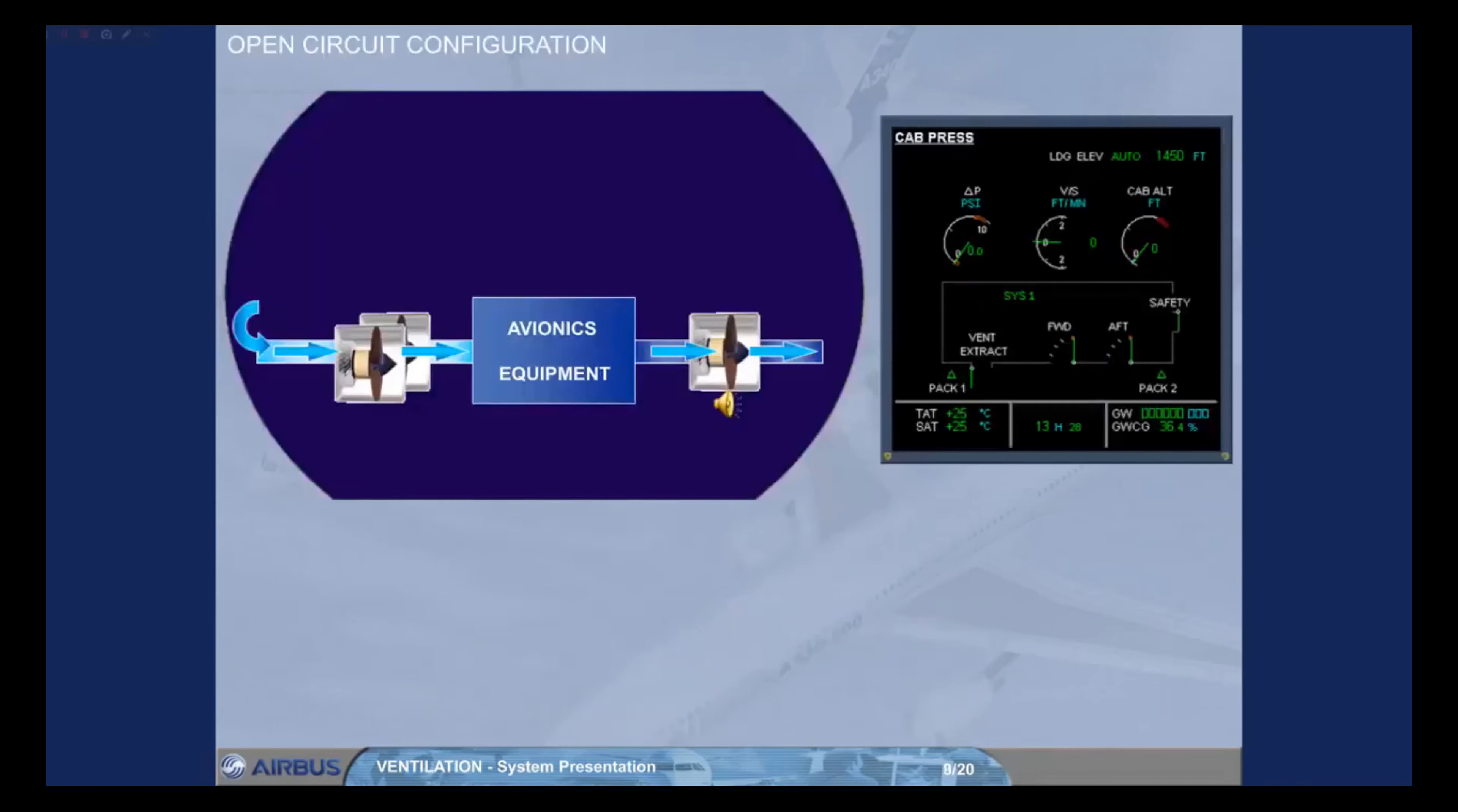On ground, with engines not running, air blown through the avionics equipment is discharged overboard via an overboard extract valve.